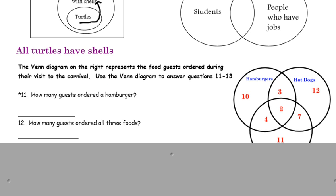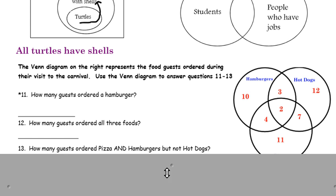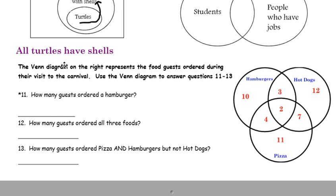Okay, and let's look at number 11. The Venn diagram on the right represents the food guests ordered during their visit to the carnival. Use the Venn diagram to answer your questions 11 to 13. How many guests ordered a hamburger? Remember, if it's just asking who ordered a hamburger, you just need to identify the circle that has hamburgers in it. Everybody in this hamburger circle, I'm going to use a different color for that.